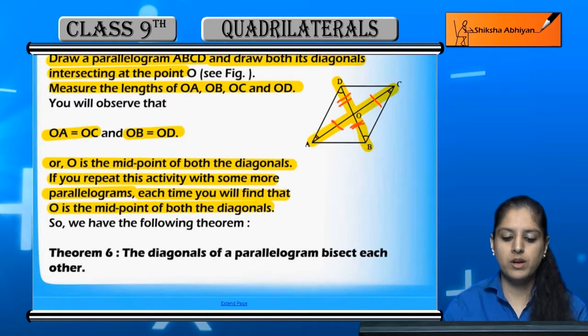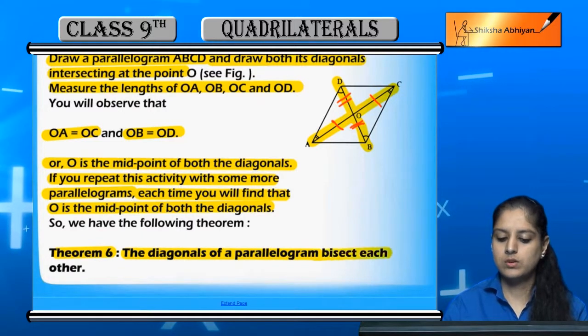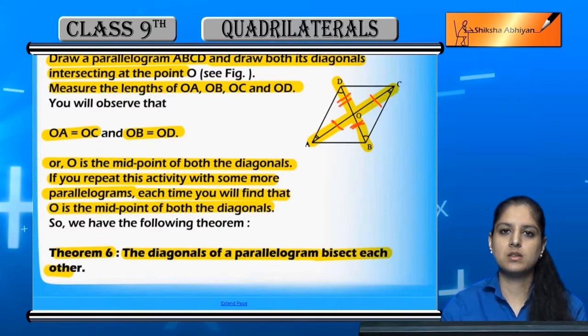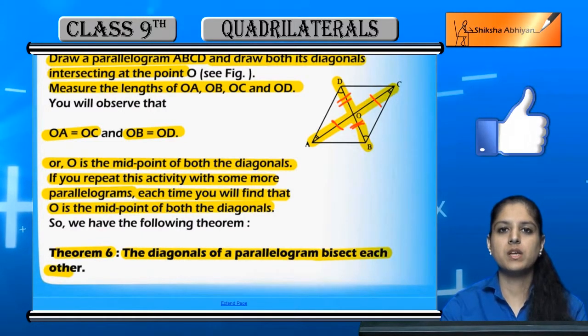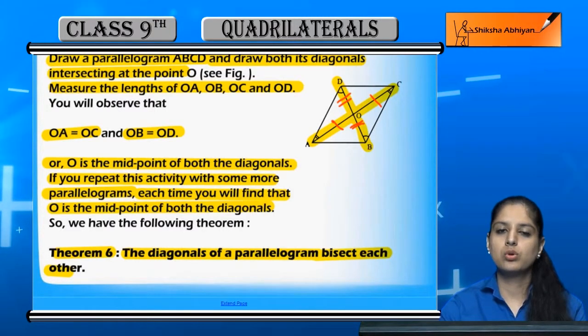Theorem 6: Parallelogram ke diagonals wo dusre ko bisect karte hain. So sixth property ek parallelogram ki hai ki ek parallelogram ke dono diagonals jahan par ek dusre ko intersect karte hain, wo ek dusre ko wahan bisect karte hain.